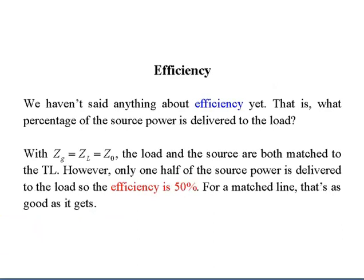Next is efficiency: the percentage of source power delivered to the load. When Z_g equals Z_L and Z_0 — the load and source are both matched to the transmission line — only half of the source power is delivered to the load. In this case, the efficiency is 50%. For a matched line, that is as good as it gets.